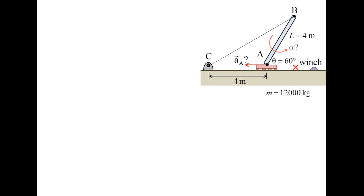What is the angular acceleration of the slab, alpha? And what is the tension T in the cable connecting points B and C? Assume that the slab will not slip on the dolly and that the mass of the dolly is negligible.